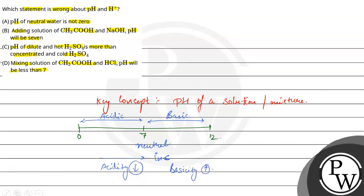If we look at the first part, the pH of water is not 0. Yes, because water is neutral, so the pH is 7. That means the first part is a correct option.